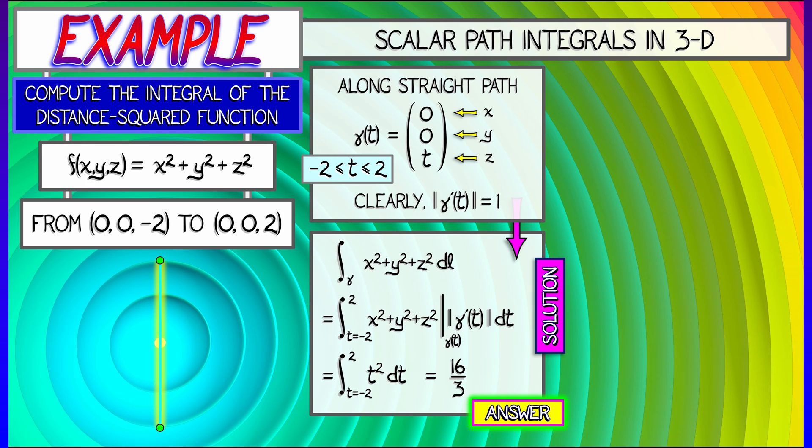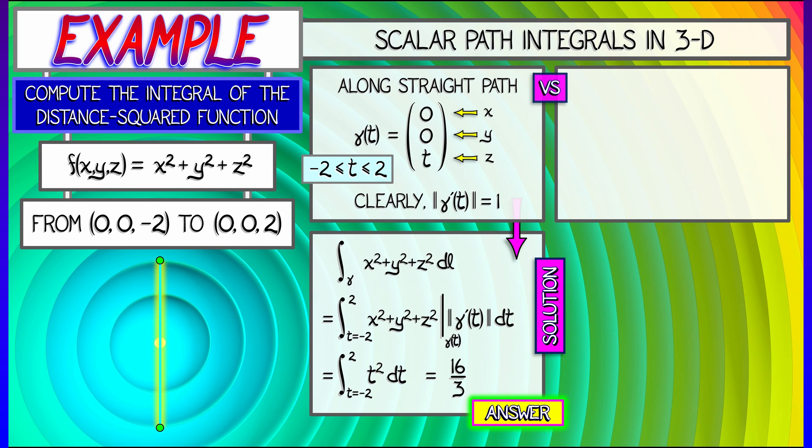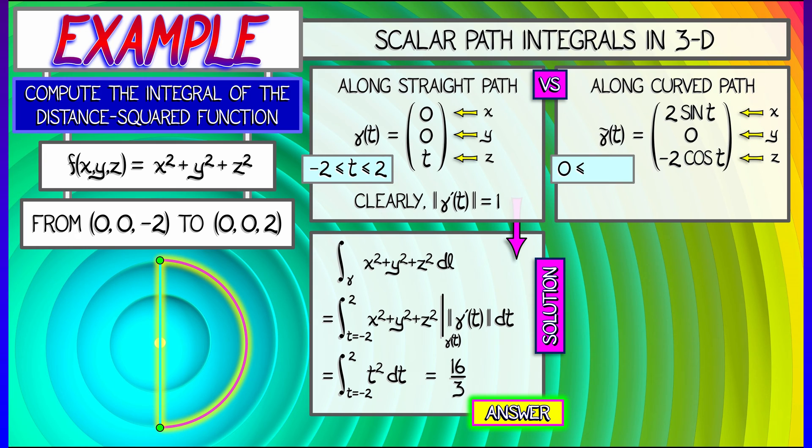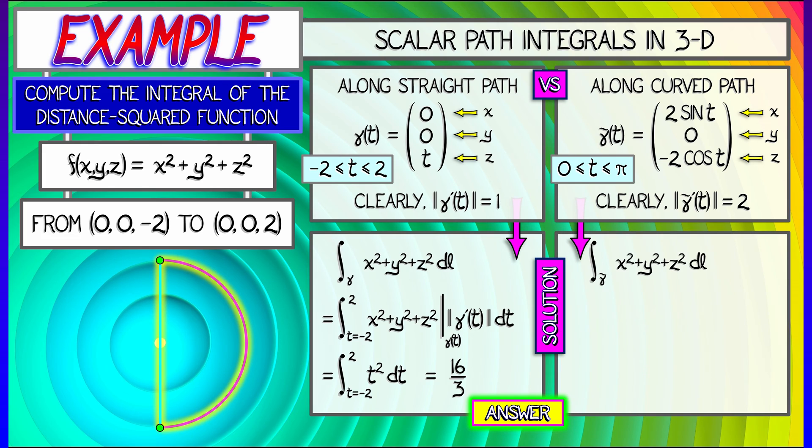Okay, well let's change things up a little bit. Instead of that straight line path, let's do a different path, a curved path. Let's say that we have a new path gamma tilde of t that is given as follows: the x coordinate is 2 sin t, the y coordinate is 0, the z coordinate is -2 cos t. Here t is going to range from 0 to π. Now this is no longer a unit speed path, but it does have constant speed. You can check that the length of gamma tilde prime of t is 2, a constant.